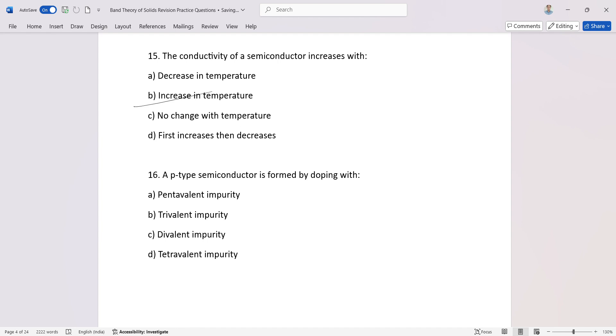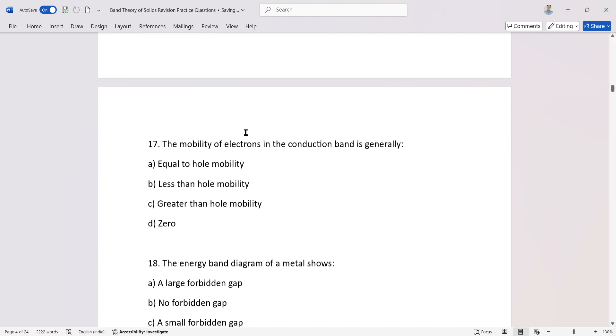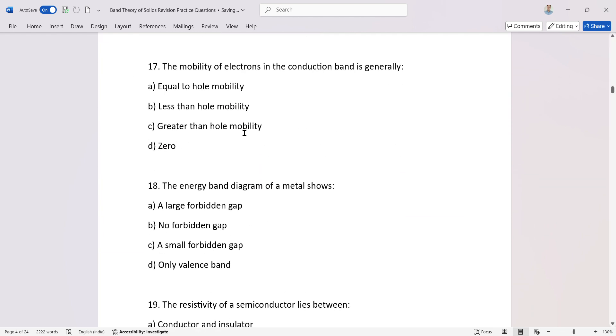A p-type semiconductor is formed by doping with trivalent impurities. The mobility of electrons in the conduction band is generally higher than holes. The energy band diagram of a metal shows no forbidden gap because the valence band and conduction band overlap.